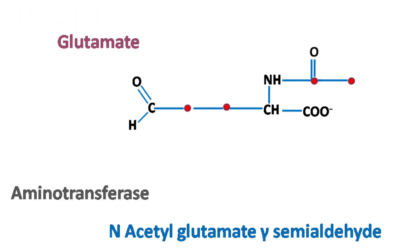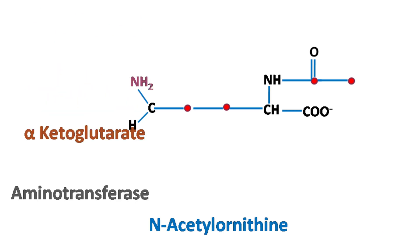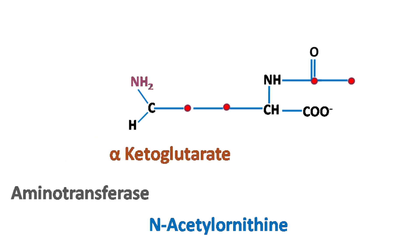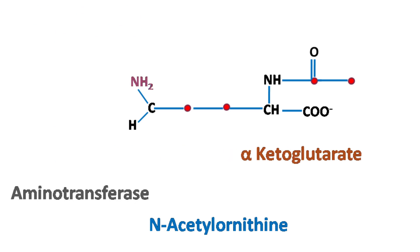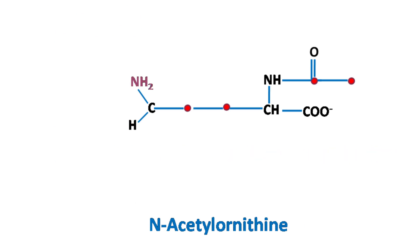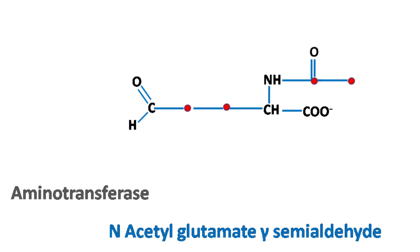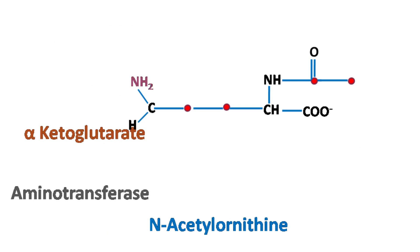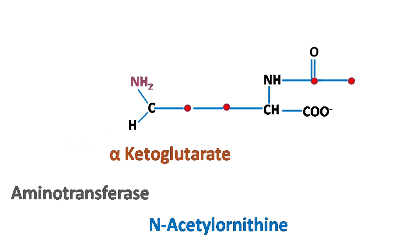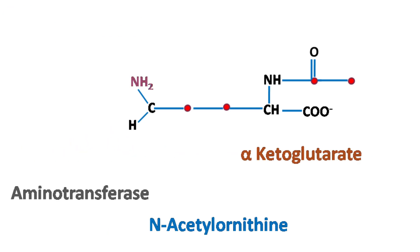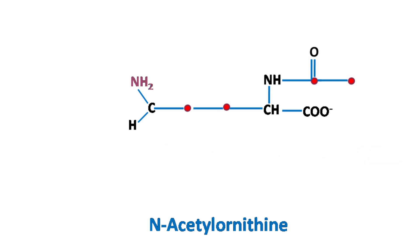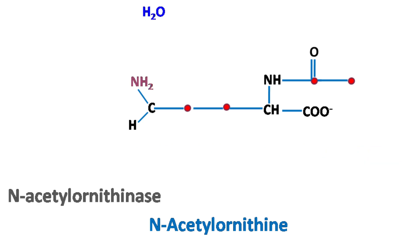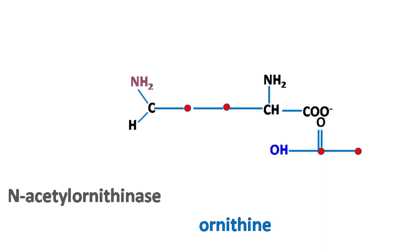Glutamate then donates its amino group to the semialdehyde, resulting in formation of N-acetyl ornithine. N-acetyl ornithinase then removes the acetate group from N-acetyl ornithine, resulting in formation of ornithine.